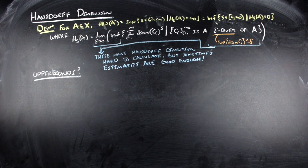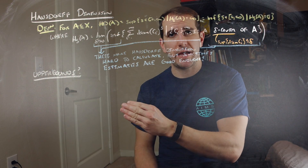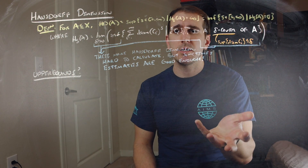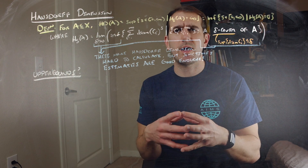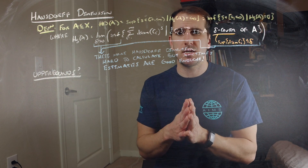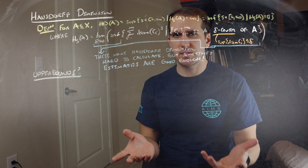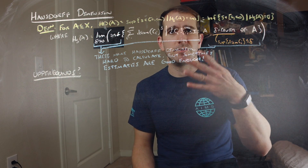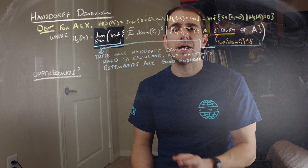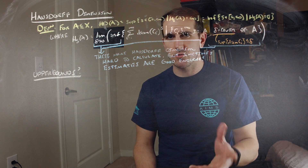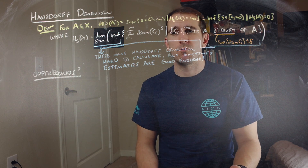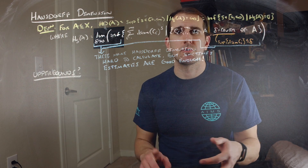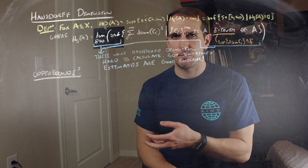There are certain things about this definition that make it hard to calculate. In particular, if you have to have a delta cover of A, your cover elements don't have fixed size — they could be a varying size — so estimates can get weird there. And then you're doing this limit of an infimum of stuff, and it's always weird to wrap your head around things when you have multiple limits, supremums, infimums, lim-sups, and lim-infs running around.